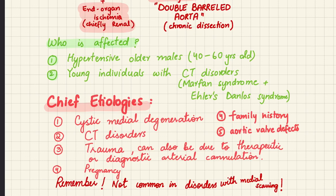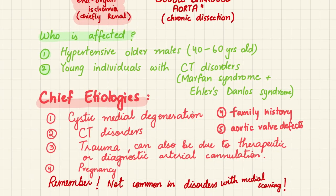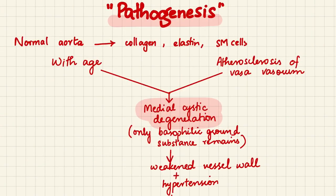The chief etiologies include cystic medial degeneration — a degeneration of the media due to atherosclerosis or obliteration of the vasa vasorum — connective tissue disorders, trauma, therapeutic or diagnostic arterial cannulation, pregnancy, and family history. Importantly, aortic dissection is not common in disorders with medial scarring; for example, syphilis causes fibrosis that is protective against aortic dissection.